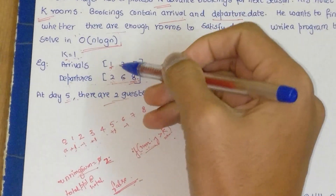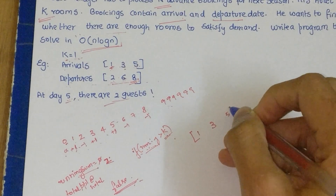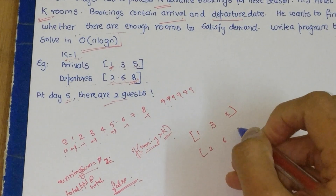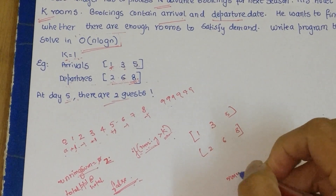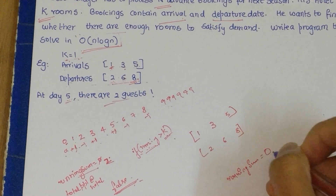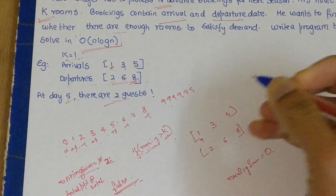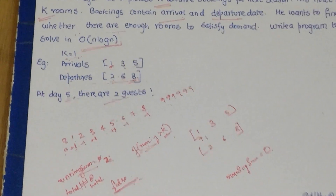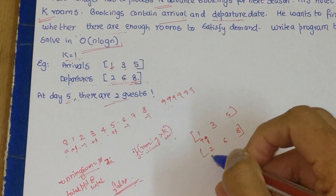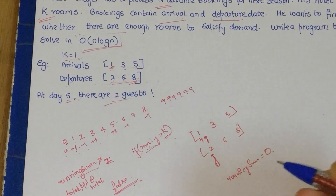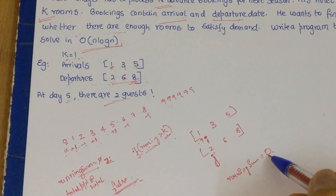A key observation is that both the arrivals and departures arrays are already sorted. So we can use a two-pointer approach: pointer i on the arrivals array [1, 3, 5] and pointer j on the departures array [2, 6, 8]. We'll iterate both arrays simultaneously and calculate the running sum to check the condition.